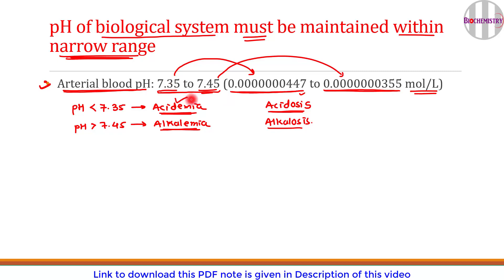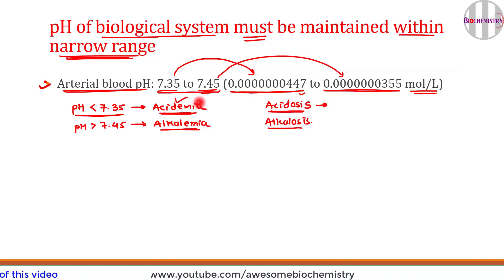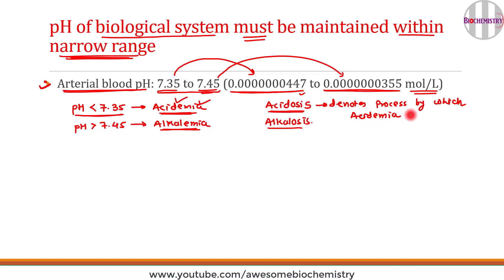Acidemia means the pH of arterial blood is less than 7.35, whereas acidosis denotes the process by which acidemia occurs. Alkalemia means pH is more than 7.45, whereas alkalosis denotes the process by which alkalemia can occur. This subtle difference must be kept in mind.